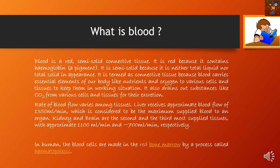All blood cells are made in red bone marrow. There are two types of bone marrow: red bone marrow and yellow bone marrow. Red bone marrow is the mature one responsible for the formation of different types of blood cells, and this process of blood cell formation is called hematopoiesis.